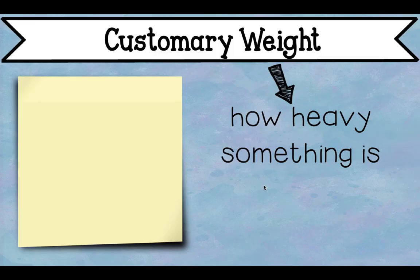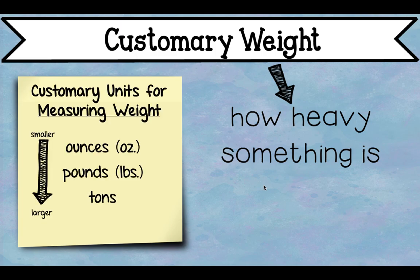Customary weight is how heavy something is. Customary units for measuring weight are ounces — abbreviated OZ — pounds — abbreviated LBS, which doesn't look like pounds but that's the abbreviation — and tons. If you notice the arrow off to the side, ounces is our smaller unit to measure weight and tons will be our larger unit.